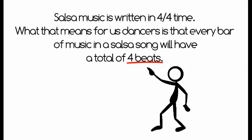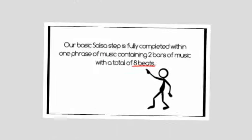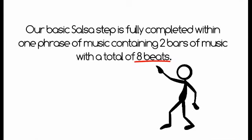Salsa music is written in 4-4 time. What that means for us dancers is that every bar of music in a Salsa song will have a total of 4 beats. Our basic Salsa step is fully completed within one phrase of music containing two bars of music with a total of 8 beats.